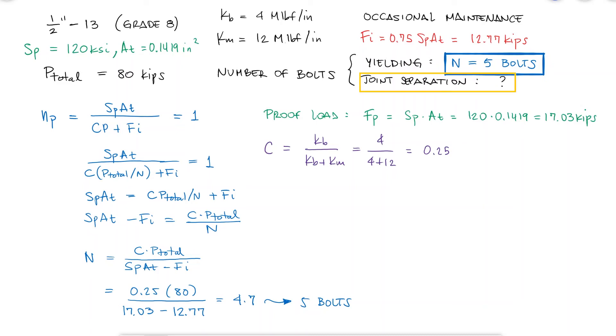Assuming a factor of safety against joint separation, n naught equal to 1, and once again, knowing that the external load that affects each bolt and member is the total external load divided by the number of bolts, we solve for the total number of bolts to find that it's also 4.7 bolts.